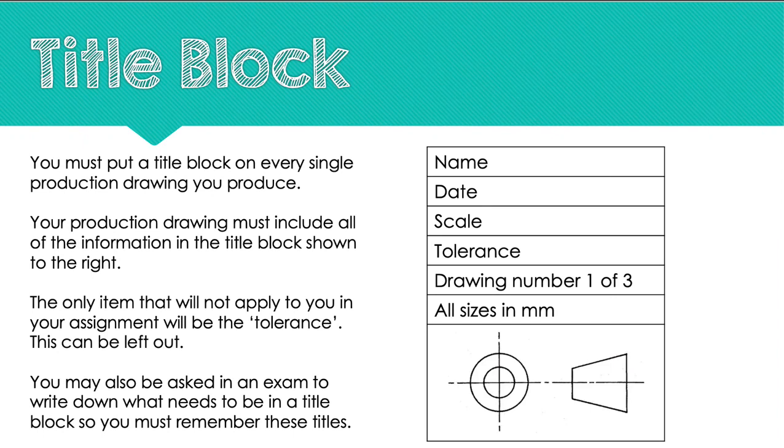The only item that doesn't apply to you in your assignment is tolerance, you wouldn't be expected to include that in your assignment. But it is one of the seven items that you could give in an exam question. It is a very common exam question to name different parts of the title block. Or, for example, they may ask you, where would scale be found on a drawing? And the answer would be on the title block. So get familiar with these seven titles. Make sure you remember them, because it's a very common question to be asked.